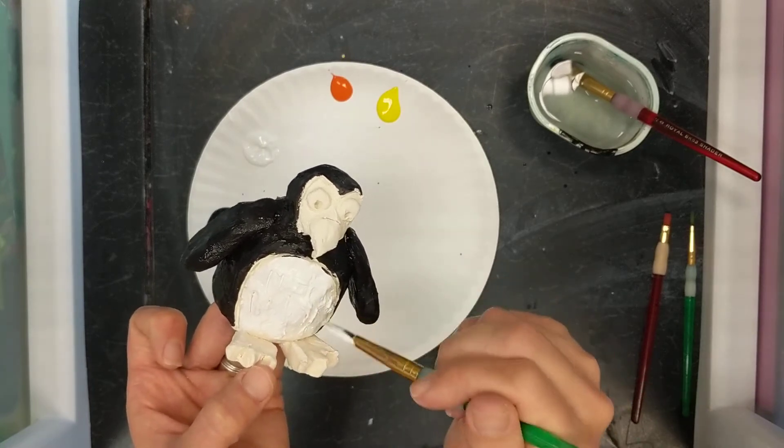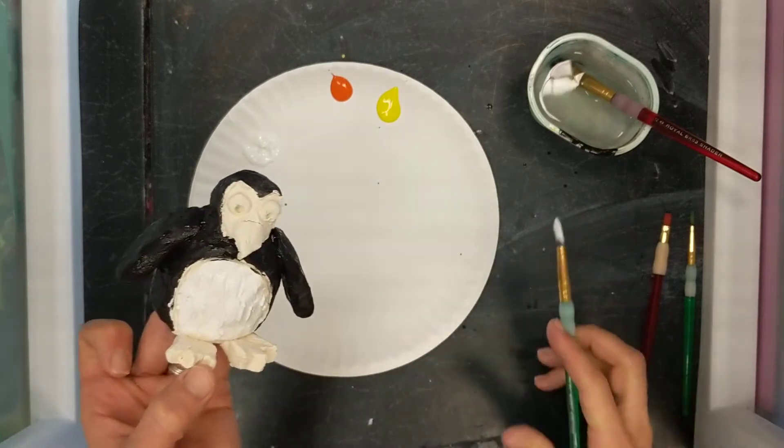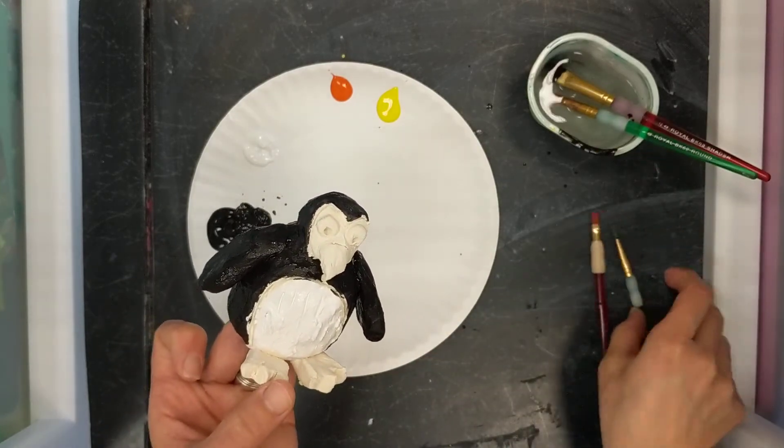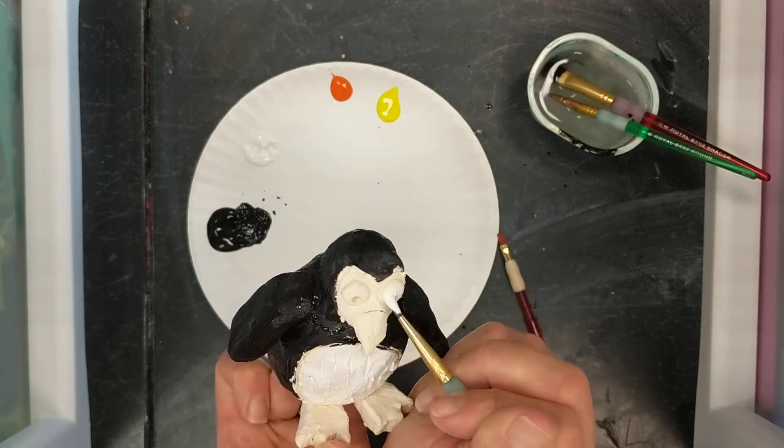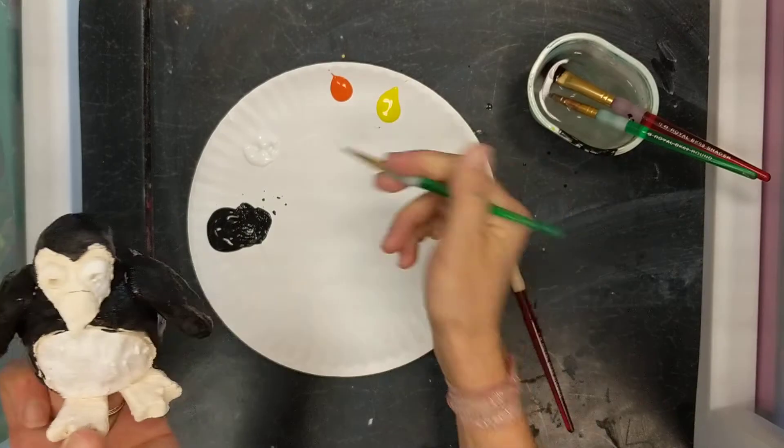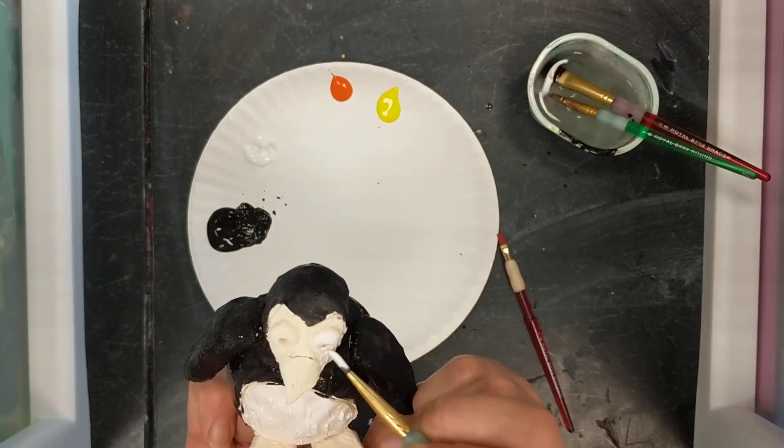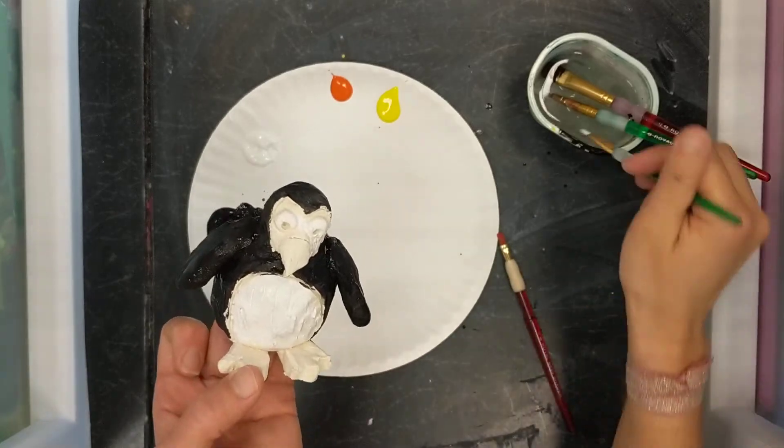But when I'm doing the face or the eyes, I need to get even smaller for my brushes. So I'm going to get even another brush. This is a smaller one. And I'm going to do my eyes of my penguin and around the face here.